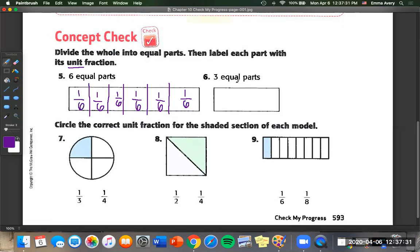On to number six. Now we just need three equal parts. So one, two, three. Our unit fraction being one over our total. So one third.